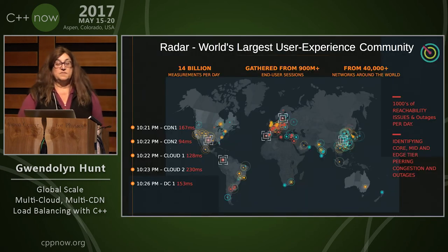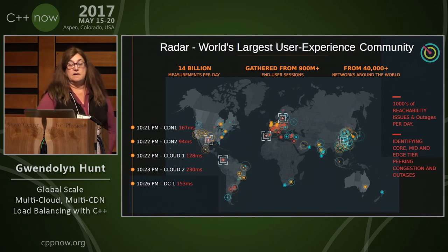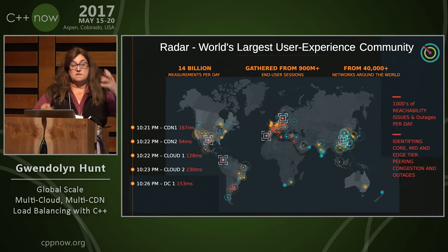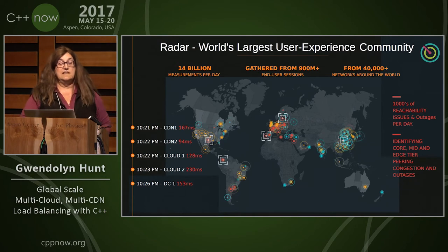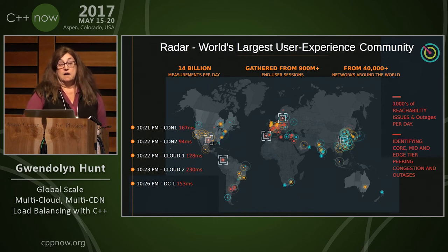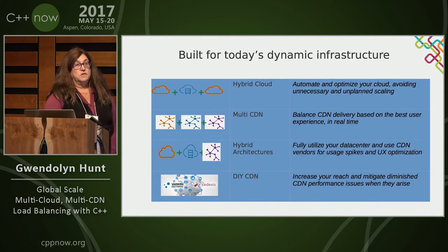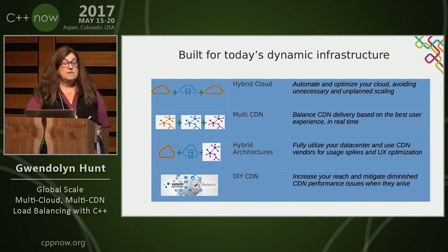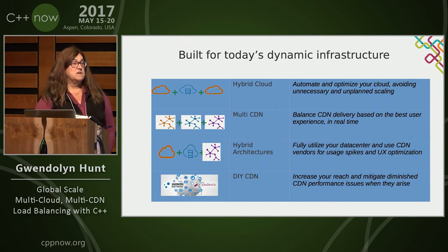This is an example of our real-time heat map. It shows a particularly noisy time on the internet. Basically, these pulses and things indicate disruptions or changes in throughput. We look at over 40,000 networks on a daily basis.